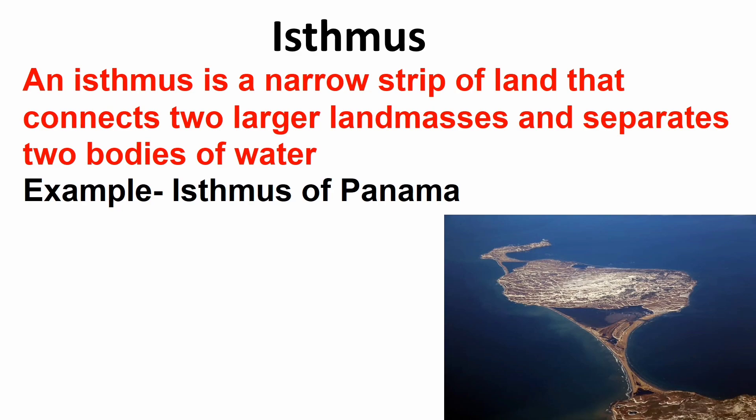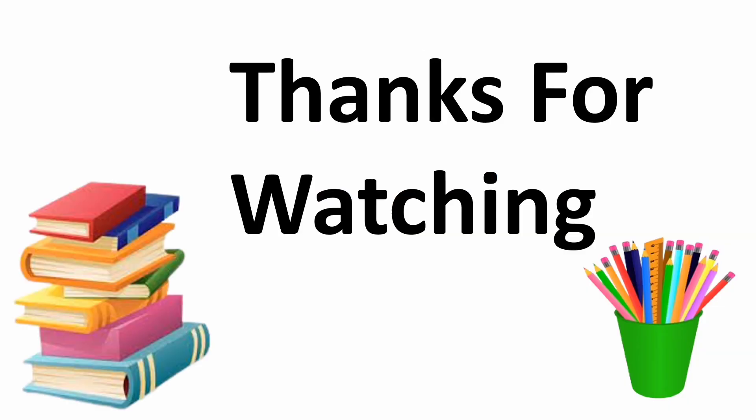Isthmus: An isthmus is a narrow strip of land that connects two larger land masses and separates two bodies of water. Example, Isthmus of Panama. Thank you everyone for watching the video. See you next time.